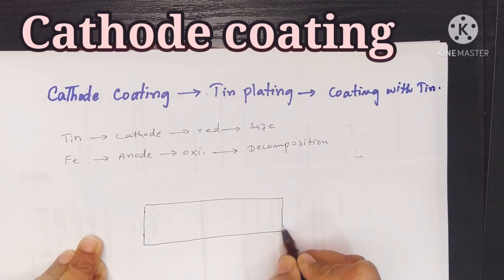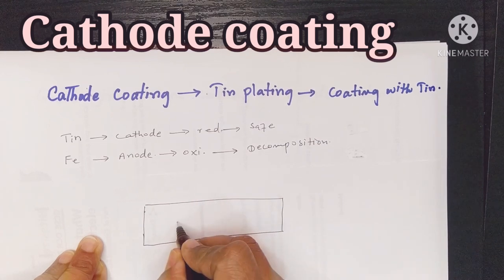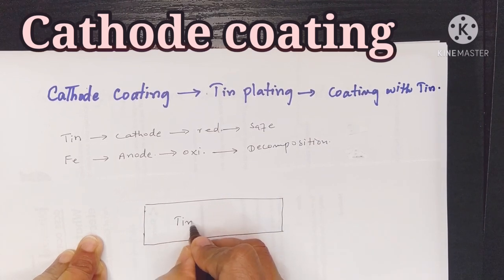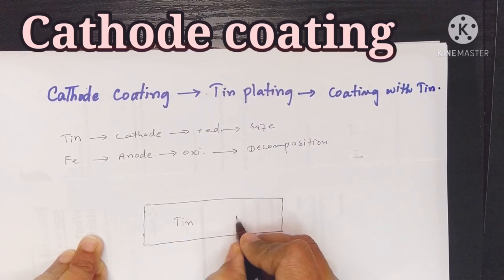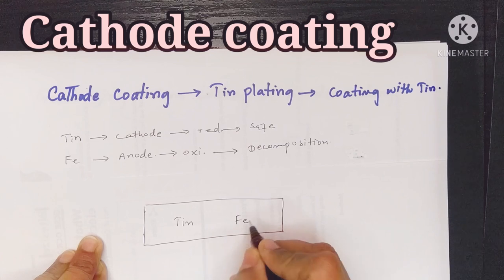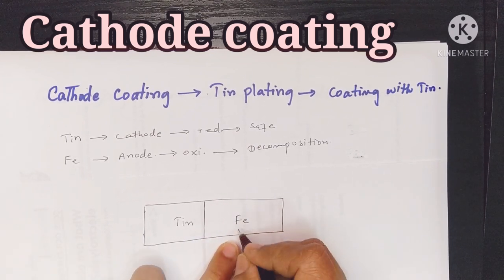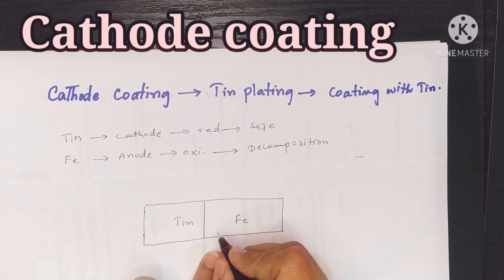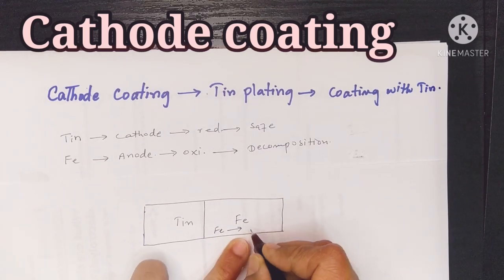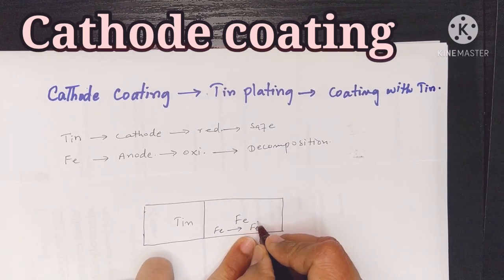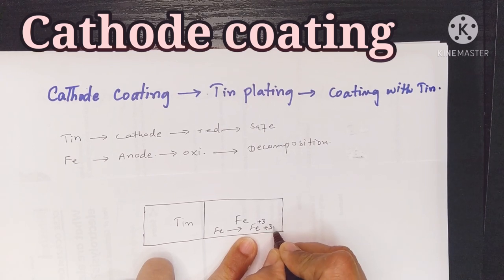There are two metals: one is tin and the other is iron. Iron is the anode and it will lose electrons — iron loses 2 to 3 electrons and this process occurs very often.